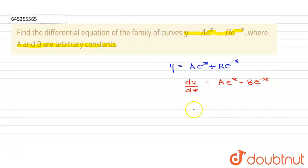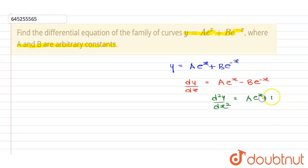Now we differentiate again. Differentiating both sides with respect to x, we get d²y/dx² = a·e^x. The differentiation of e^(-x) is -e^(-x), so the minus signs cancel, giving us +b·e^(-x). Now, a·e^x + b·e^(-x) is nothing but equal to y.